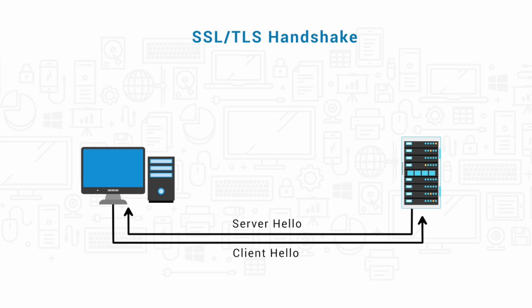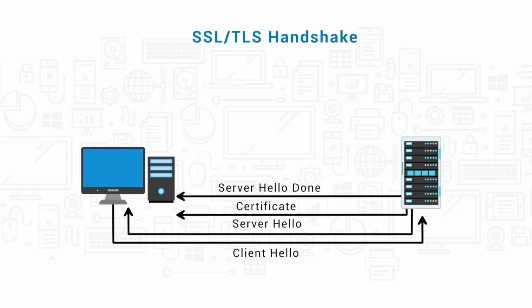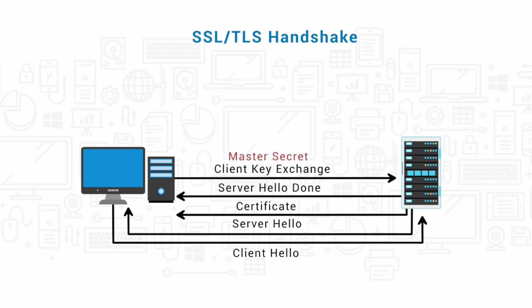The server then sends a message to the client called the certificate message. Then the server sends another message called the server hello done message, which indicates that the server is done with the negotiation phase. Once the client knows that the server is done, it responds with a client key exchange message. Both the client and server use the random numbers that they sent each other to compute a common secret, which is called the master secret.